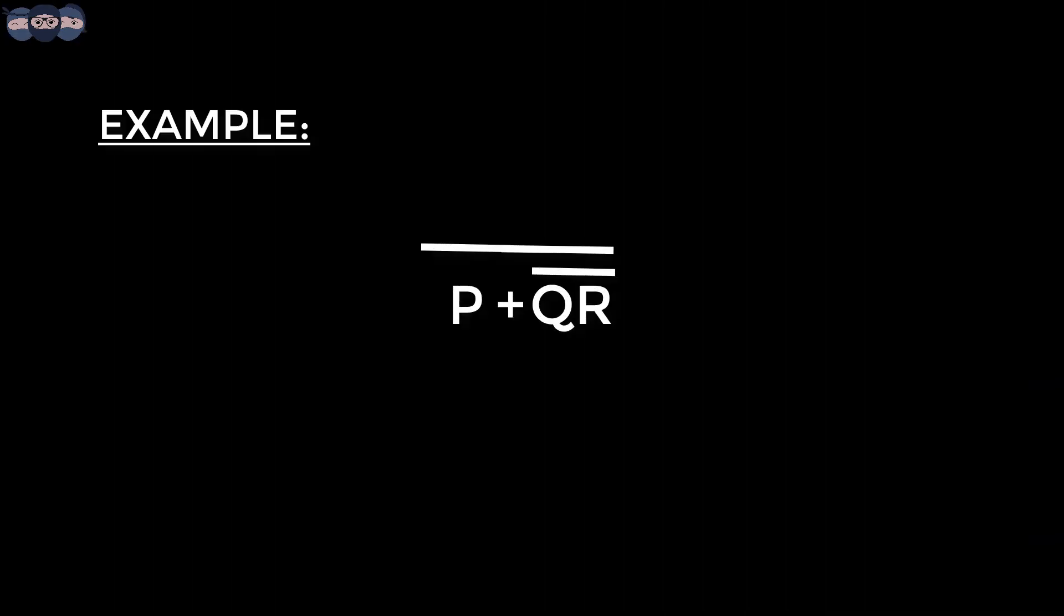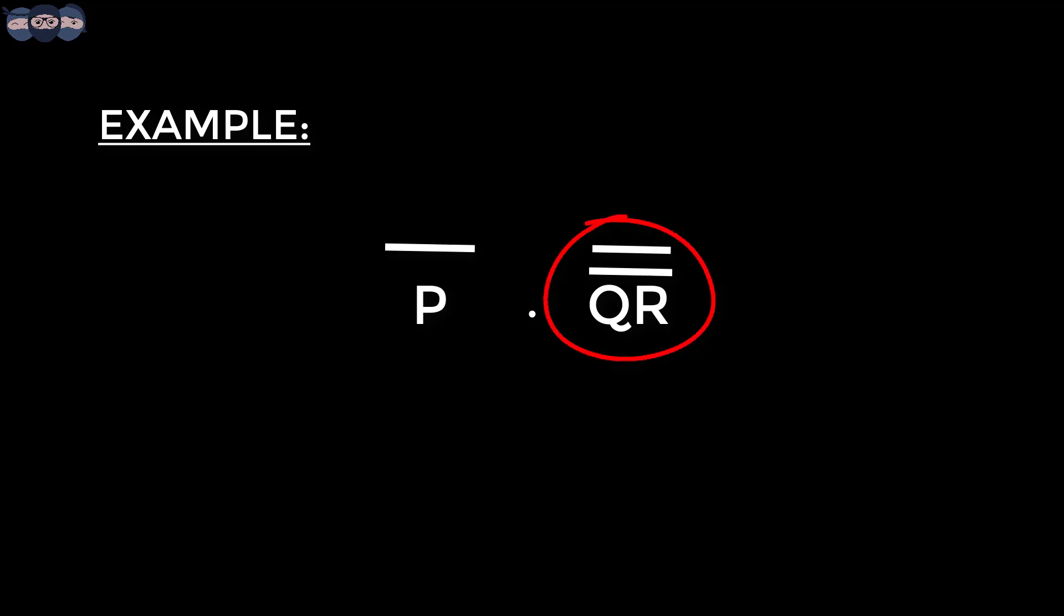Consider this expression. We have two complement terms. Always start with the bigger complement. We break the complement equally. This term is in double complement form. The first complement inverts the term and the second complement reverts it to original. Hence the complement disappears. This is the final expression.